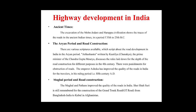There were punishable punishments for the obstruction of roads. Emperor Ashoka improved the quality of roads in India for travelers during his ruling period in the 5th century AD. In the Mughal period, the Mughals and Pathans improved the quality of roads in India. Sher Shah Suri is still remembered for his construction of the Grand Trunk Road, commonly known as the GT Road, from Bangladesh through India to Kabul in Afghanistan.